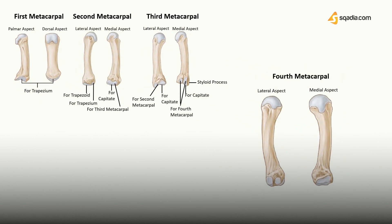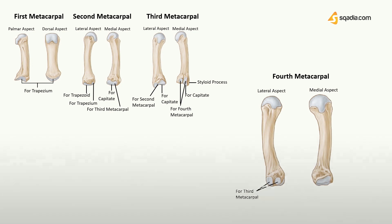The ring finger metacarpal has two oval facets on its lateral surface through which it articulates with the base of the third metacarpal, along with an articulation point for the capitate. A single elongated facet on its medial surface provides articulation with the base of the fifth metacarpal. The proximal surface is quadrangular in shape and provides articulation with the hamate bone.